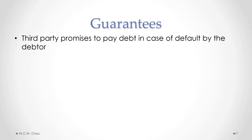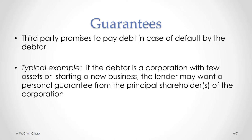A very typical example is where a corporation is applying for a loan from a bank — usually a new corporation starting out with a new business. As a new business, the corporation likely has very few assets and no track record of earnings. The bank will more often than not want a personal guarantee from the principal shareholder. So the effect is that if the corporation defaults on the loan, the bank can ask the principal shareholder to pay the loan, and the principal shareholder will be personally liable.